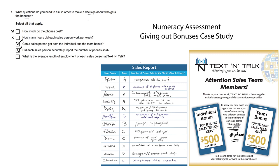Did each salesperson accurately report the number of phones sold? This question is important for making a good decision about who should win the award. Look at this handwriting — it's not so clear, and everyone is recording information in a slightly different manner. If someone accidentally added an extra digit, that would be unfair. So this is definitely a relevant question.